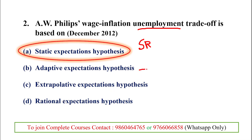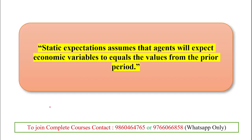The short-run Phillips curve is based on static expectation, and the long-run Phillips curve is based on adaptive expectation. Static expectation assumes agents will expect economic variables to equal values from the prior period. For example, with static expectation, the expected inflation rate for the future period equals the last period's inflation rate — the current period inflation equals the prior period inflation.